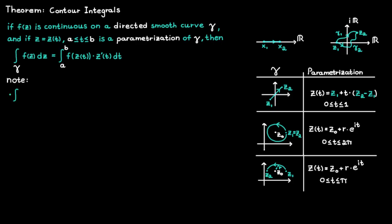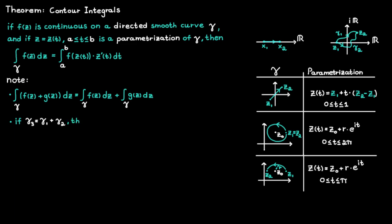If we would like to determine the integral of a function f plus a function g over some path gamma, then we can just split them up and determine the integrals for f and g separately. Another useful property is that if your path is made up of two separate paths, then the integral along the bigger path is equal to the sum of the integrals along the smaller paths.